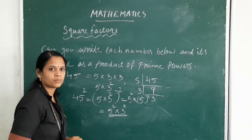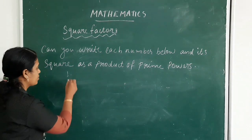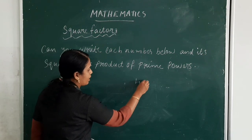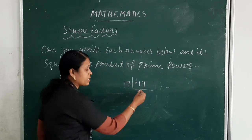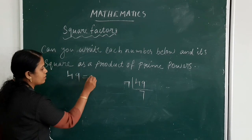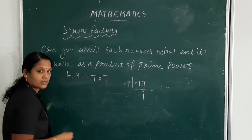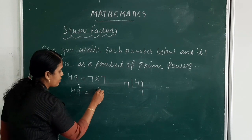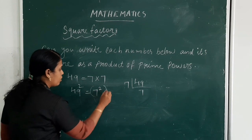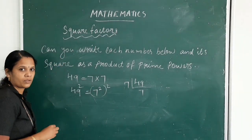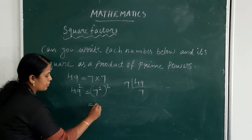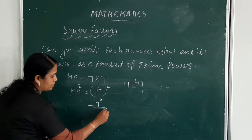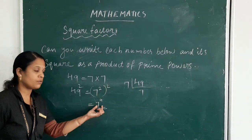Next one: 49. 49 is divisible by 7, giving 7. So 49 = 7². What is 49 squared? It is (7²) whole square, which equals 7 to the power 4, since 2 × 2 = 4.